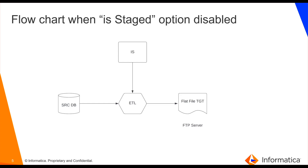This is the flowchart when the staged option is disabled. Considering the example where you are using an FTP connection for your flat file target — when the staged option is disabled, the integration service will write directly to the target file on the FTP host. So if the network or anything fails, if there is a network failure, then you must run the session again in order to write the required data into the flat file.